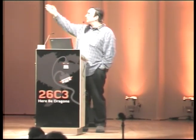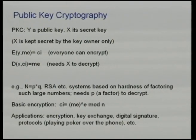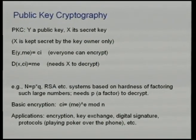This was the idea of Diffie and Hellman in the late 70s. The first example was RSA, which is based on factoring large numbers. There is a number N that is the product of two large primes P and Q, and you cannot factor them. You can take a message and raise it to the power e mod N, and only if you can factor N can you recover the message M. Applications include encryption, key exchange, digital signatures, and various protocols suggested over the last 30 years, like playing poker over the phone.